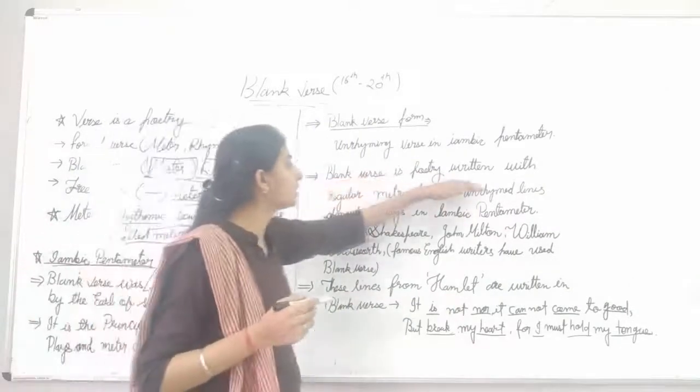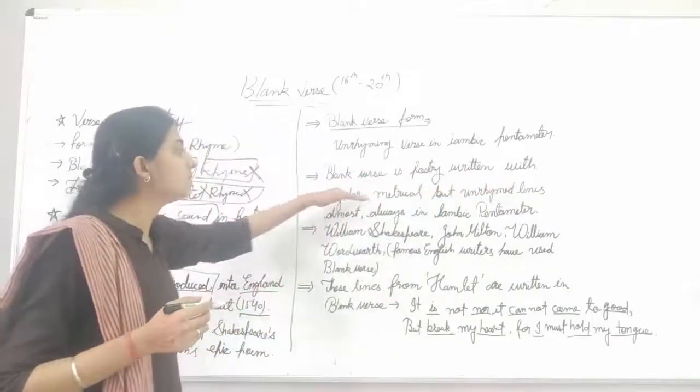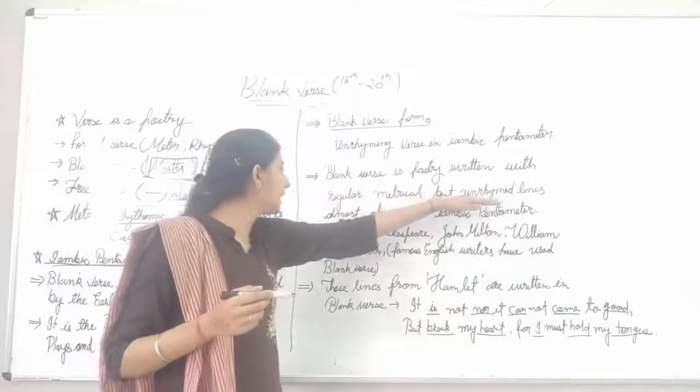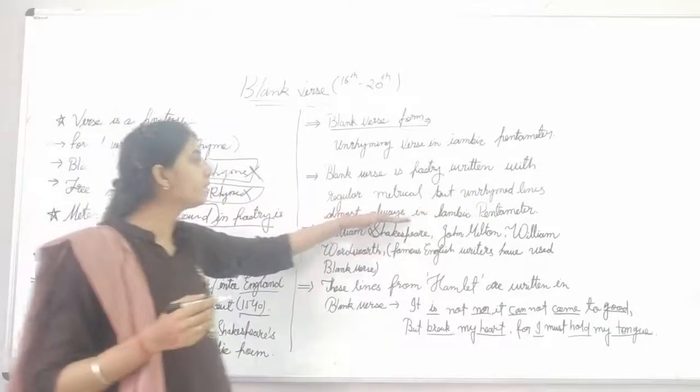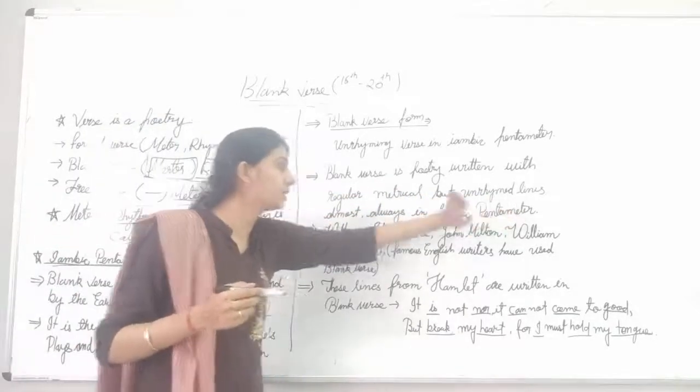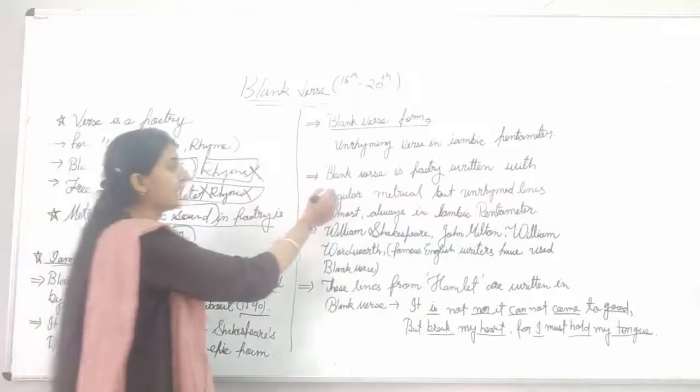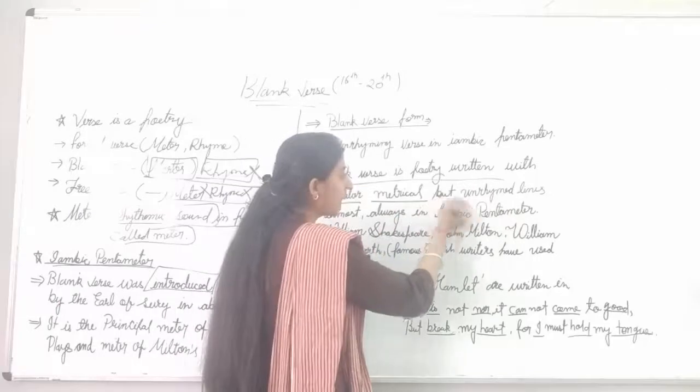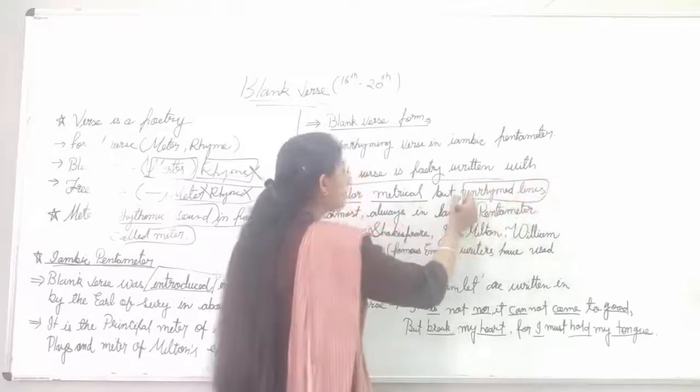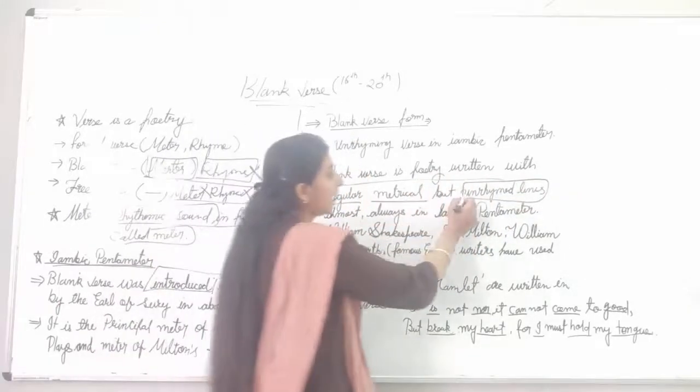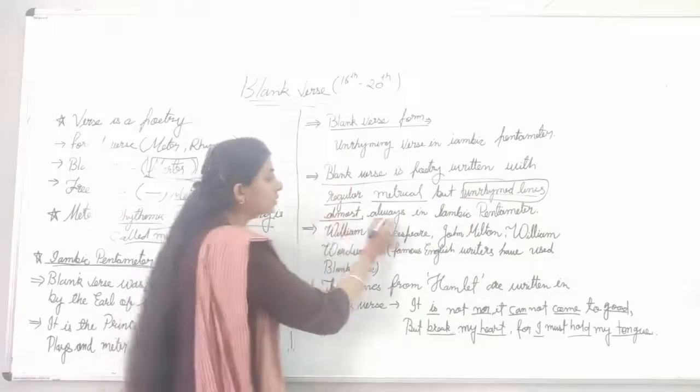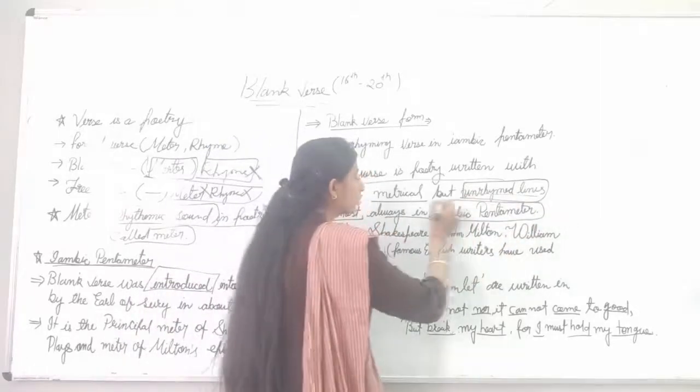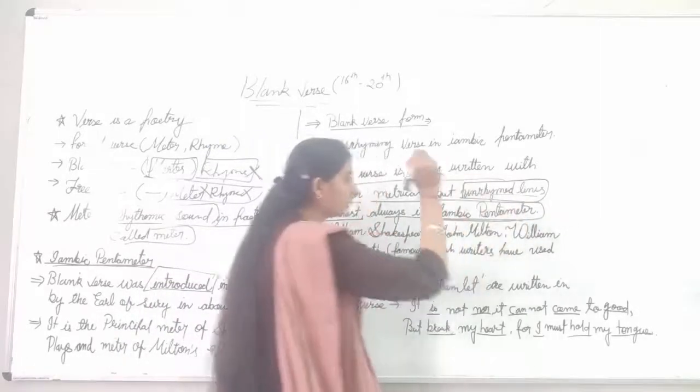Blank verse is written in iambic pentameter but unrhymed lines. Almost always in iambic pentameter. The blank verse is used in epic poems. This is why the entire line is written almost always in iambic pentameter.